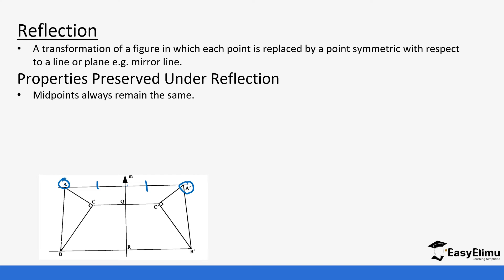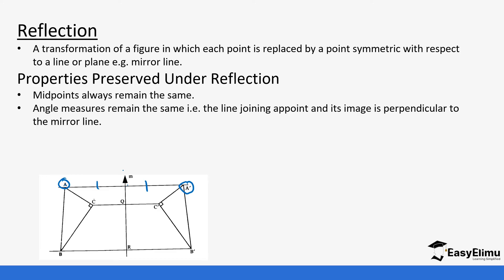When you look at the properties of reflection: first, the midpoints always remain the same — when you talk about midpoints you're talking about the mirror lines. The angles also remain the same, so if a triangle is reflected on a mirror line, the corresponding angles will always be equal. The line joining a point and its image is perpendicular to the mirror line, as you can see.